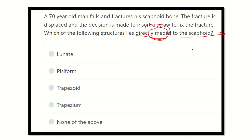The key point is: which structure lies medial to the scaphoid bone? We have the options: lunate bone, pisiform bone, trapezoid bone, trapezium bone, and none of the above.